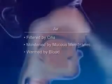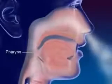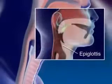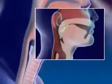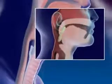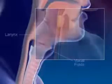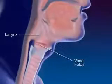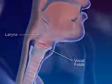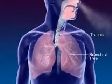Air moves into the pharynx, or throat, the common passageway for food and air. Air continues on to the larynx. The epiglottis, a flap of tissue in front of the larynx, closes off the larynx when swallowing to prevent food from entering. The larynx, or voice box, contains the vocal folds.